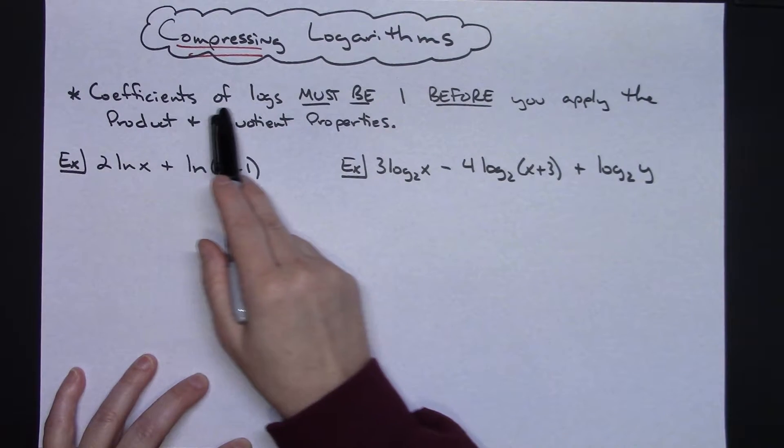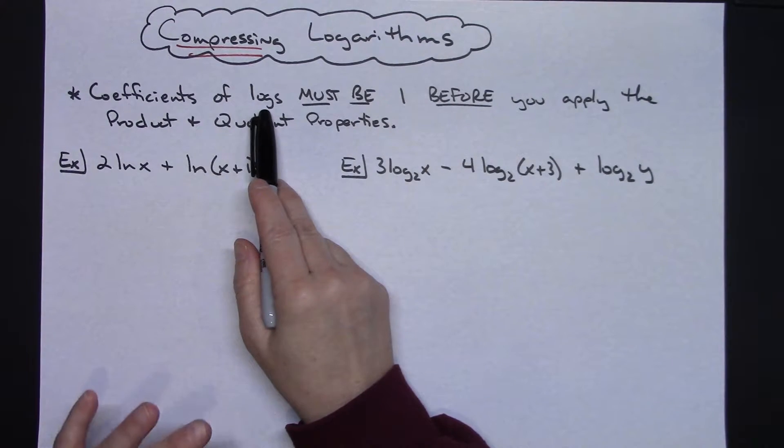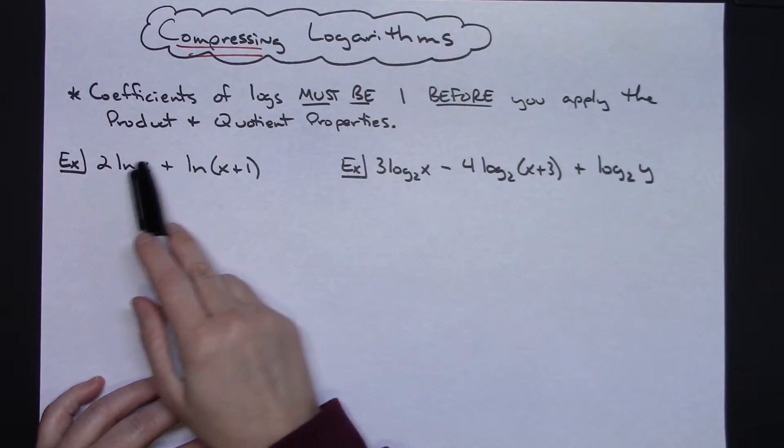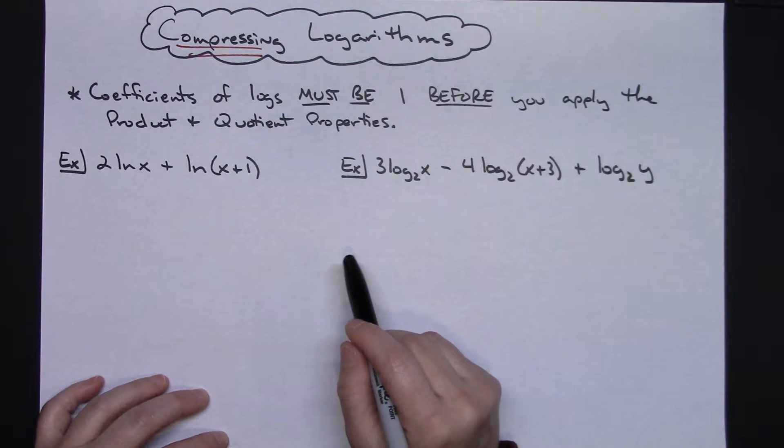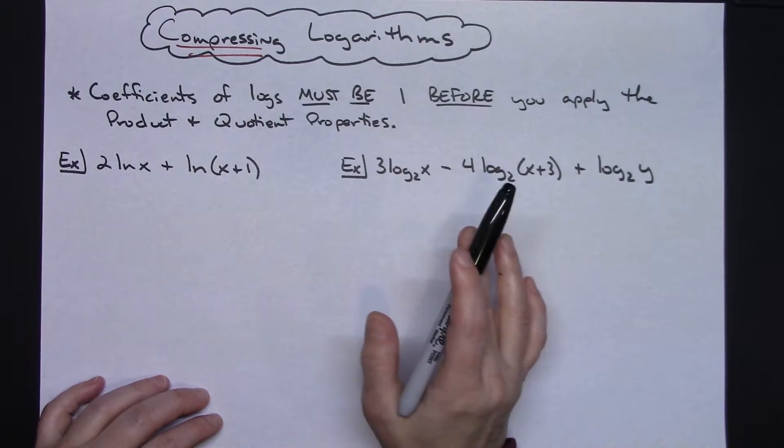It's just going to make the compressing a whole lot simpler. Okay, so in this first example here I've got 2 natural log of x plus natural log of (x+1).